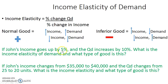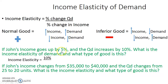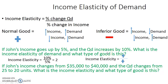Let's look at an example. If John's income goes up by 5% and the quantity demanded increases by 10%, what is the income elasticity of demand, and what type of good is this? We plug into the formula: percentage change in quantity demanded (positive 10%) divided by percentage change in income (positive 5%) gives a coefficient of 2. A positive divided by a positive gives a positive result, so this good is a normal good.